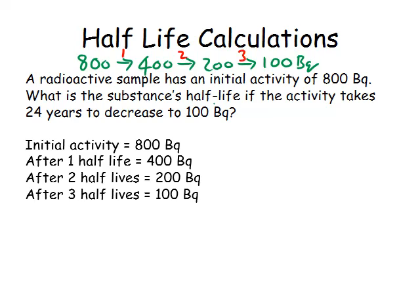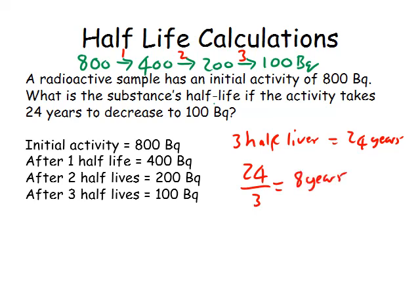Count the number of arrows. 1, 2, 3. So we've got three half-lives in 24 years. So 24 divided by 3 will be 8 years for one half-life.